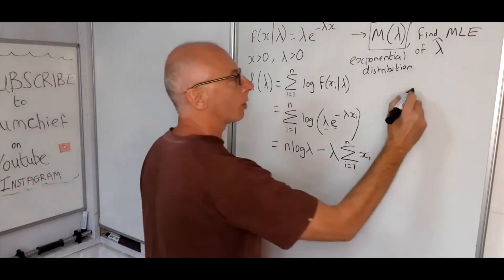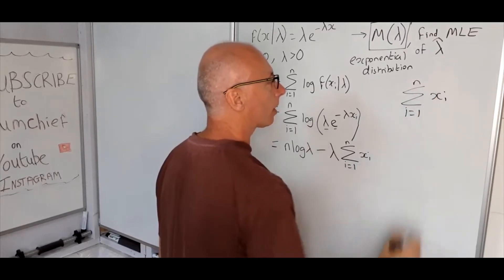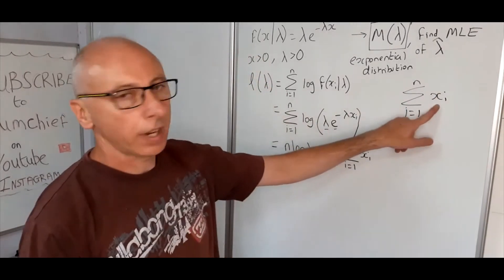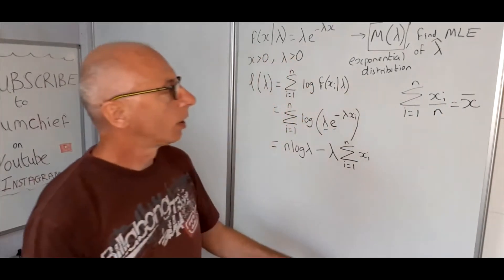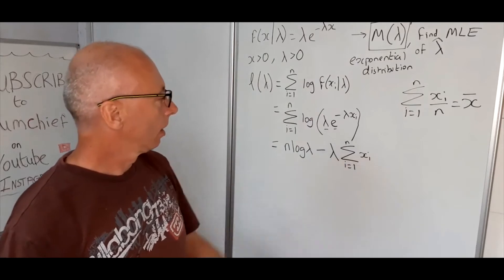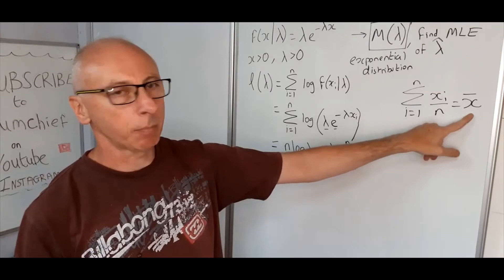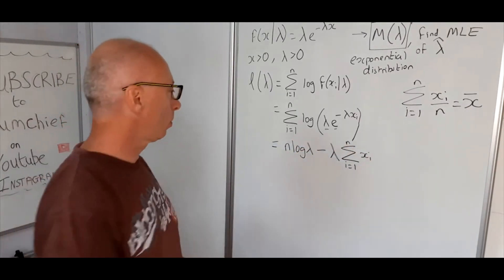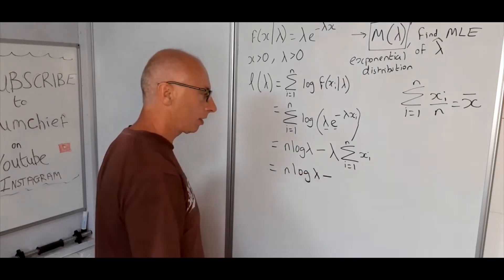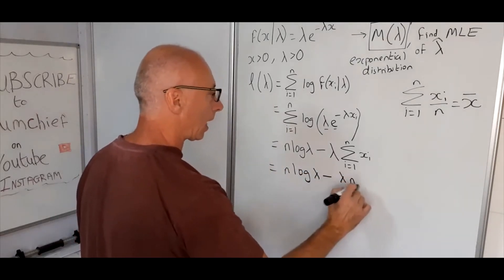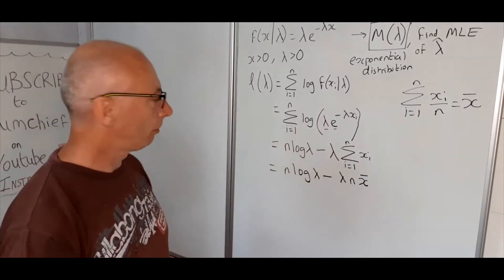We know that the sum from i = 1 to n of x_i, divided by n, gives the sample mean x̄. So we can write the sum as n * x̄ without changing the value. The log-likelihood becomes n * log(lambda) - lambda * n * x̄.